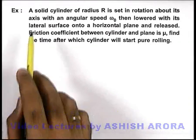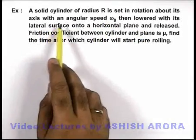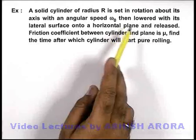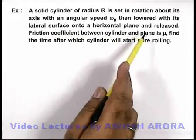In this problem we are given that a solid cylinder of radius R is set in rotation about its axis with an angular speed omega knot, then lowered with its lateral surface onto a horizontal plane and released.